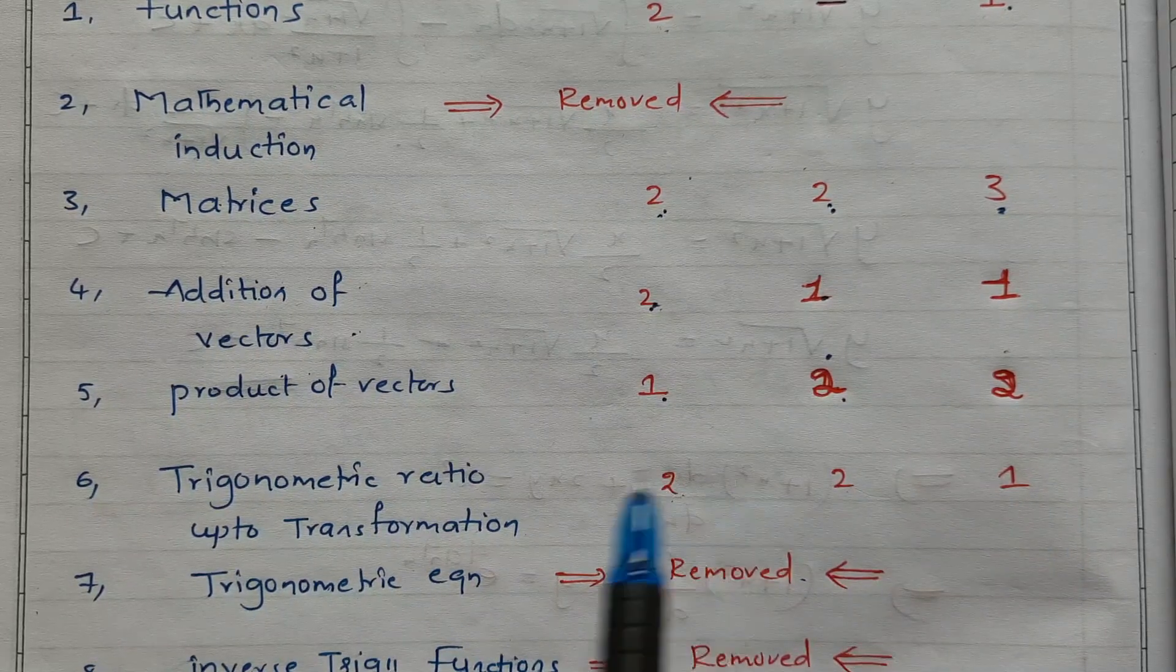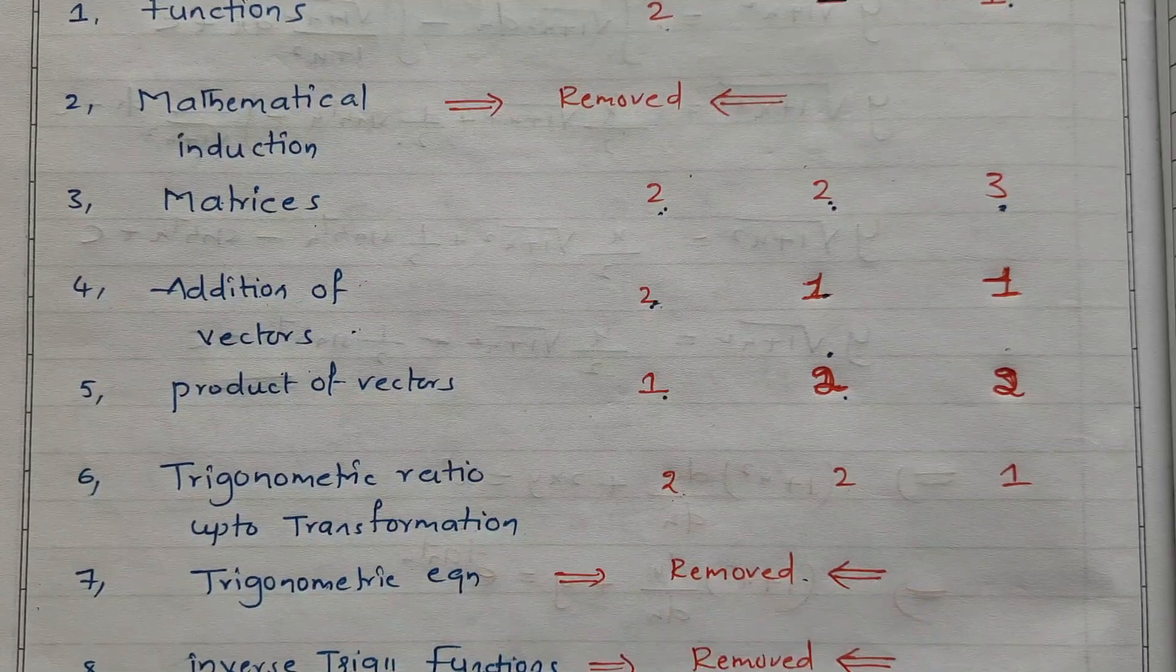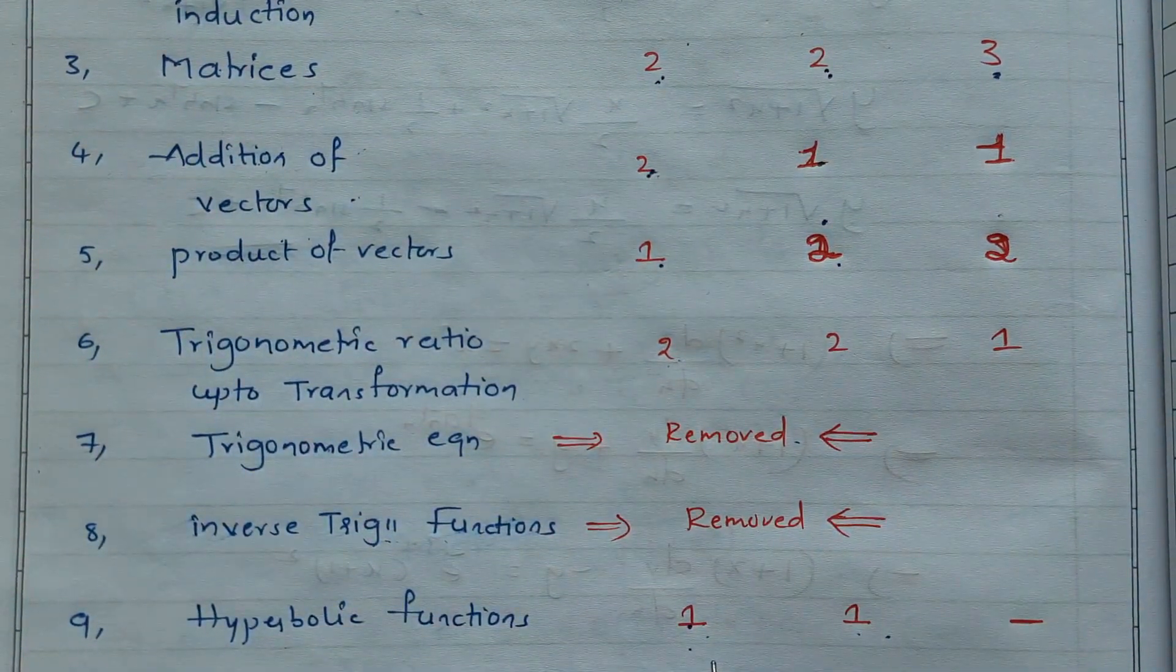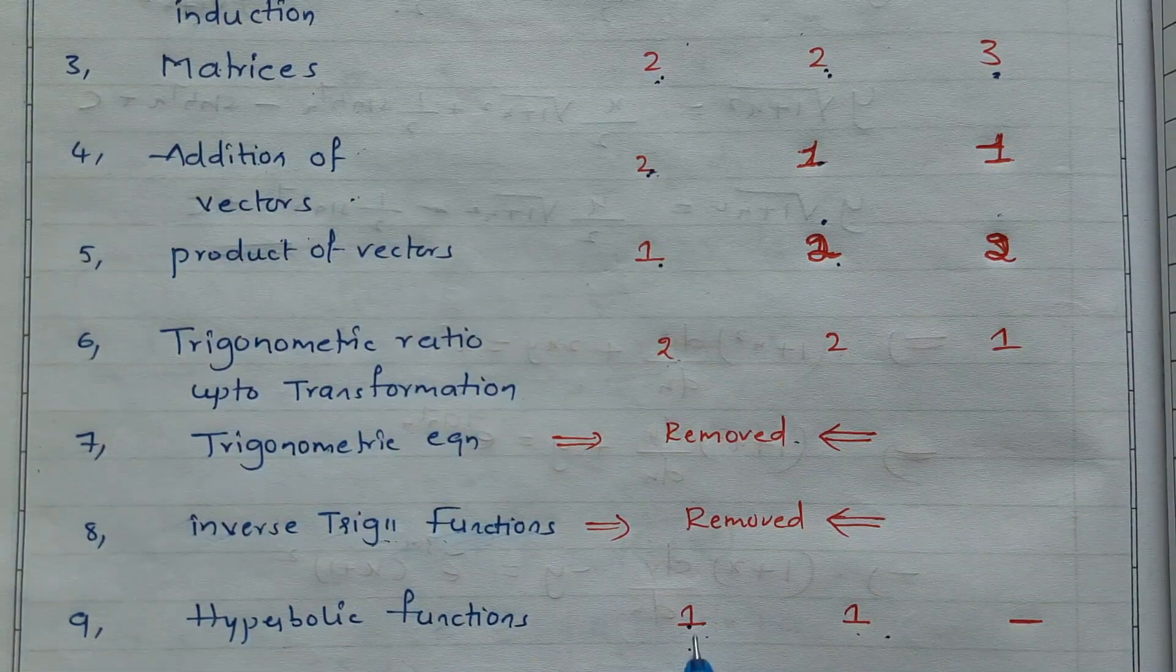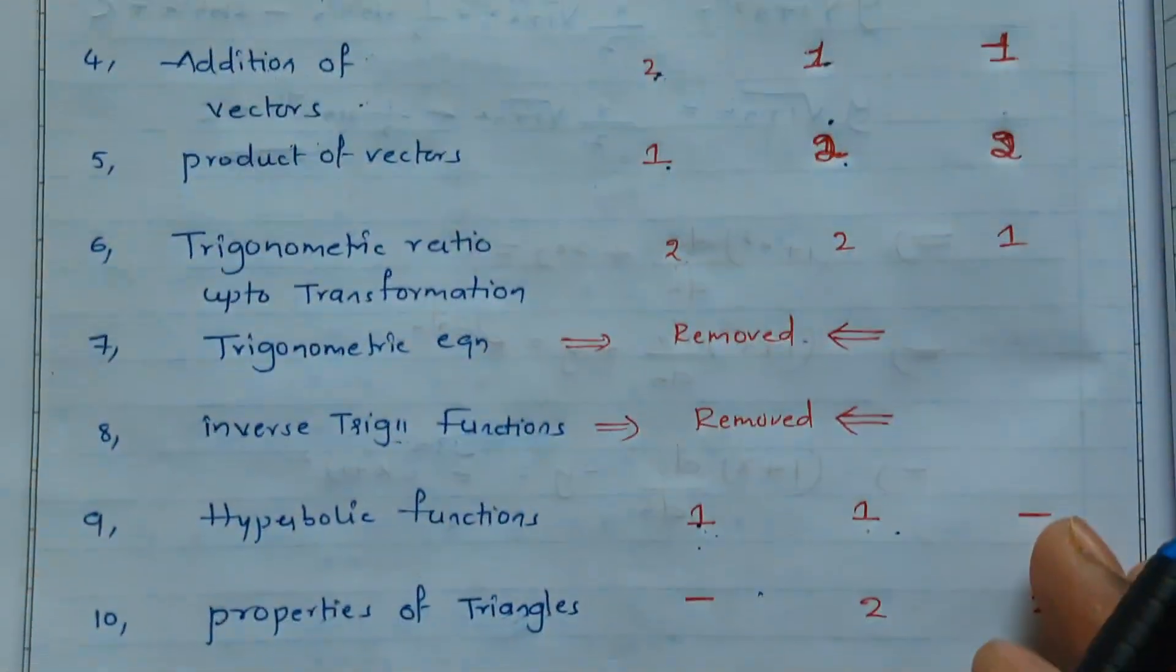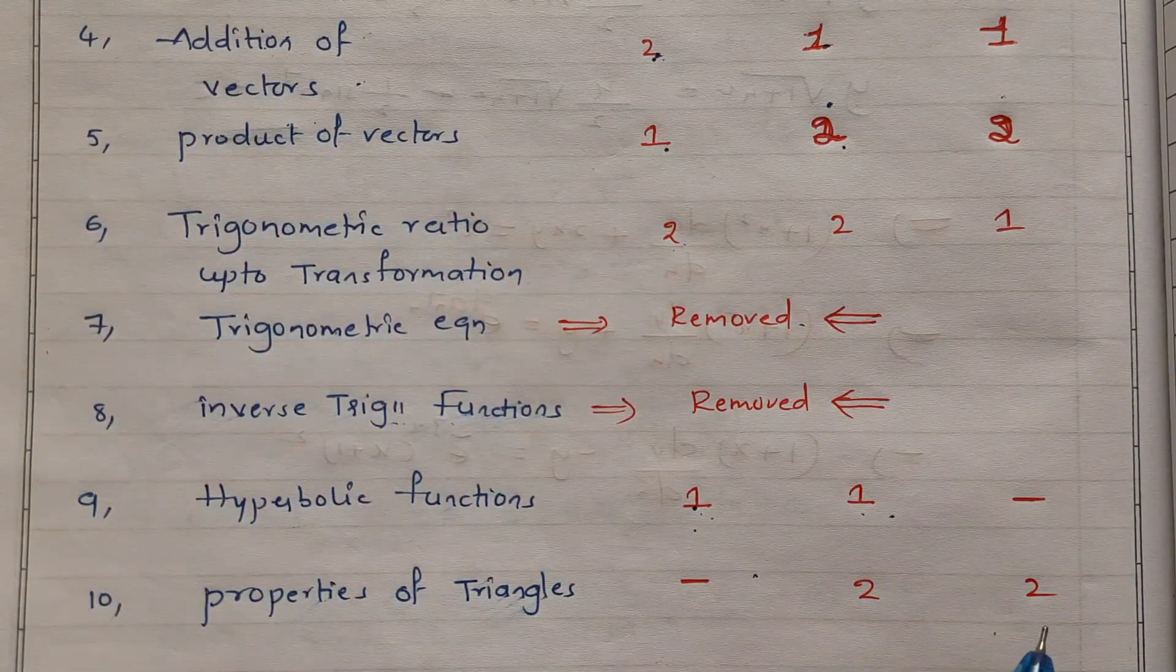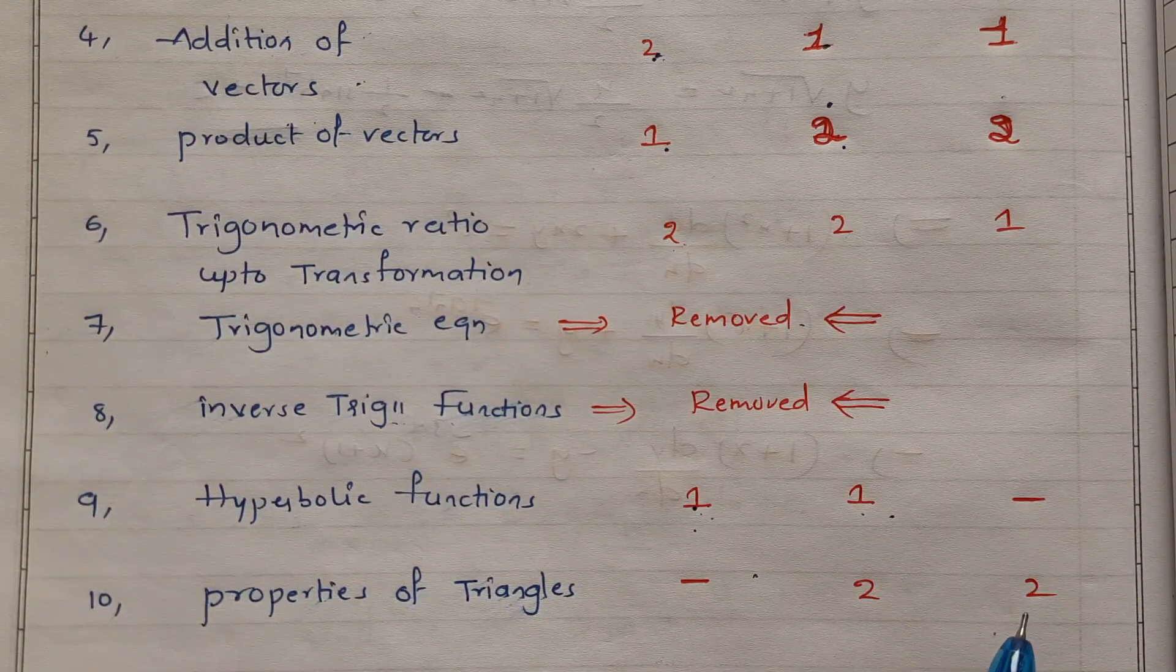Inverse trigonometry functions removed. Hyperbolic functions - only one exercise, one exercise 10 problems, one is two marks question, one is four marks question. Properties of triangle - two four-mark questions, two seven-mark questions.